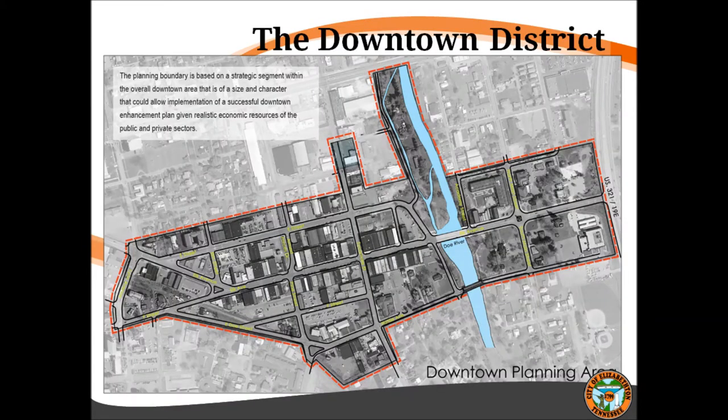You can see from this slide that this is a specific area that we would commonly call our downtown area. This is from a plan that you may be familiar with called the McGill Plan. After their analysis, this is an area they have determined to be an actual core area of business, and this is the district that we would concentrate on for forming a Central Business Improvement District.